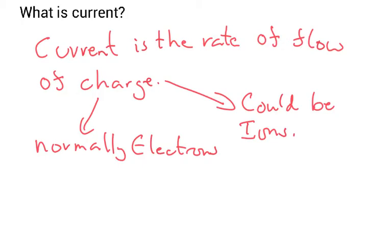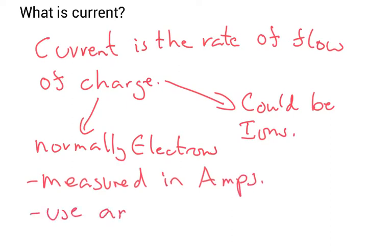Now, normally electrons, but could be ions. Remember, ions are positively or negatively charged atoms because they've either lost or gained electrons. Current is measured in amps, and we use an ammeter to measure.